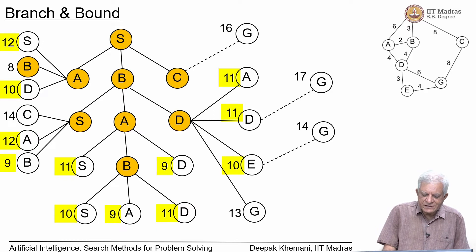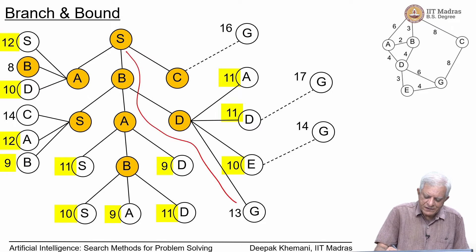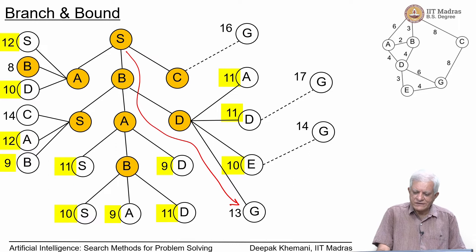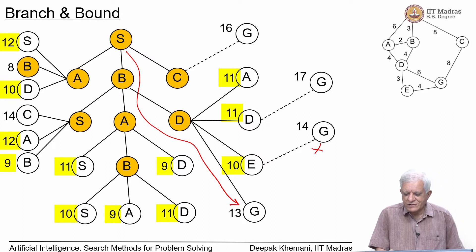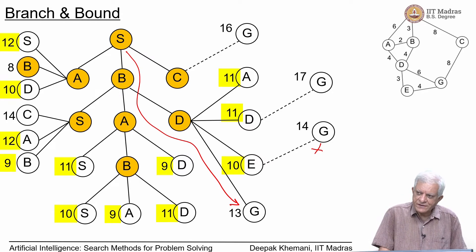The algorithm looks at all nodes whose costs are shown in yellow because they are all cheaper, and eventually finds a path to G with cost 13. You should verify that after processing all those yellow-cost nodes, when it picks G, that is the cheapest path from start to goal. This is the branch and bound algorithm applied to state space search. We can improve it by removing duplicates — removing nodes already visited in a path — to make the search space smaller.